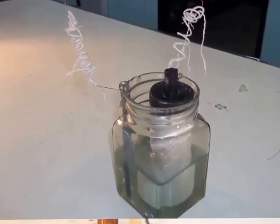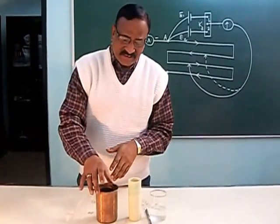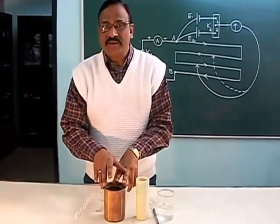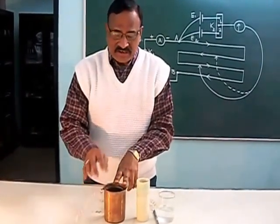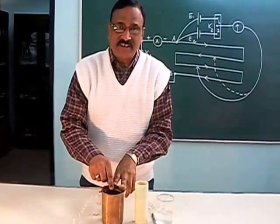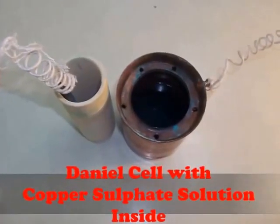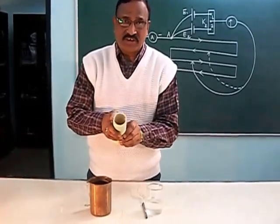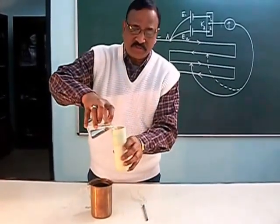Now let us see how to form a Daniel cell. The Daniel cell consists of a container made of copper, which itself plays the role of the positive electrode, and it has copper sulfate solution inside. It also has a hollow porous pot, and we put dilute sulfuric acid inside the porous pot.